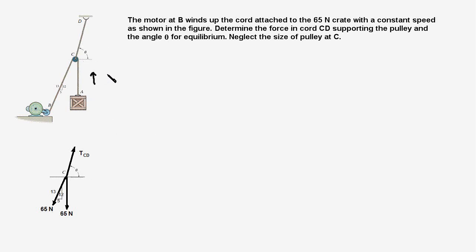The tension in cord AC is 65N. Why? Because if we draw a free body diagram of the crate, the weight mg acts downward and the tension TAC acts upward. Since the velocity is constant, the acceleration is zero, and therefore the net force is zero. Therefore, TAC equals mg, which is 65N.